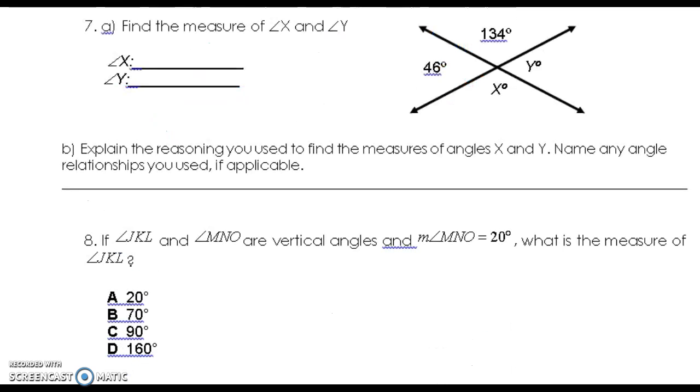Find the measure of angle x and y. Y is 46. These are vertical, they're across from each other, so y is 46 because they're congruent, and x is 134. Explain your reasoning: I used vertical angles because vertical angles are congruent.